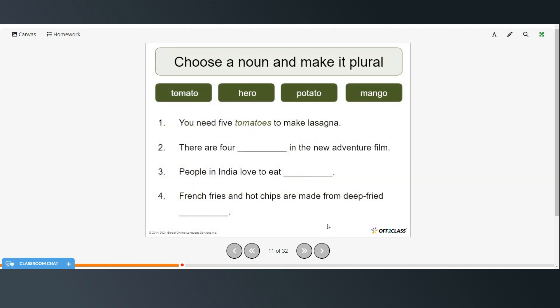Alright, so you're going to choose a noun for each sentence and make it plural. So you can pause the video, try that on your own, and then restart when you're ready to see the answers. Alright, here are the answers. There are four heroes in the new adventure film. People in India love to eat mangoes. And french fries and hot chips are made from deep fried potatoes.